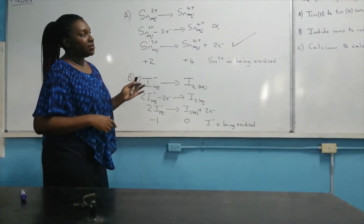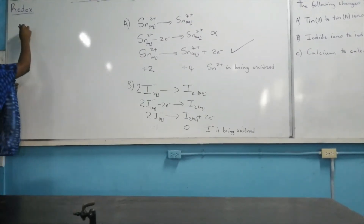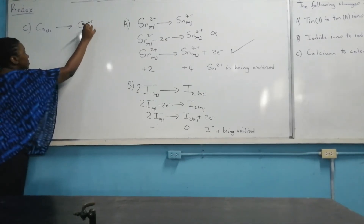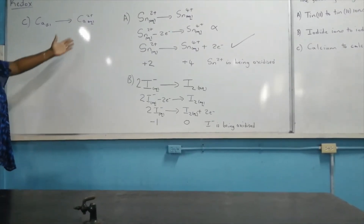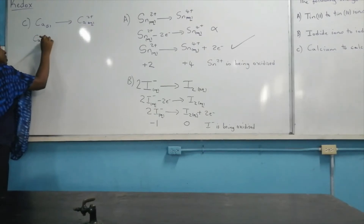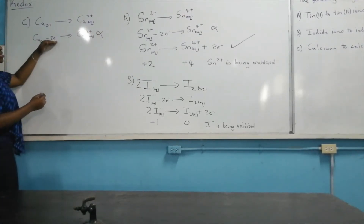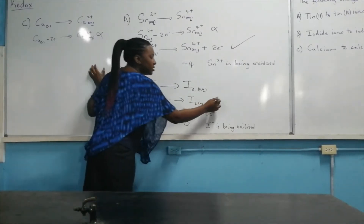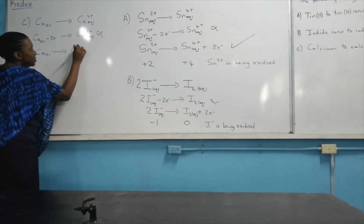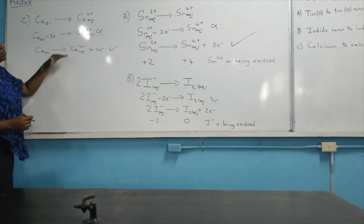The last process to represent is the change from calcium to calcium ions. So we have calcium metal being converted to ions. Obviously we're losing two electrons because calcium is neutral and calcium ions carry a 2+ charge. Calcium is losing two electrons to form calcium ions. But it's incorrect to write electrons being subtracted. So we rewrite: calcium will form calcium ions and give off two electrons in the process. This is showing oxidation.